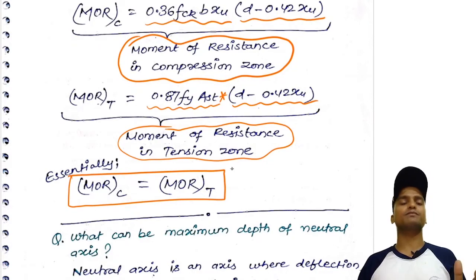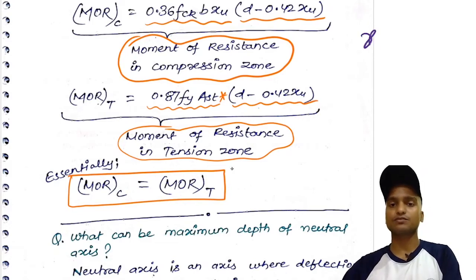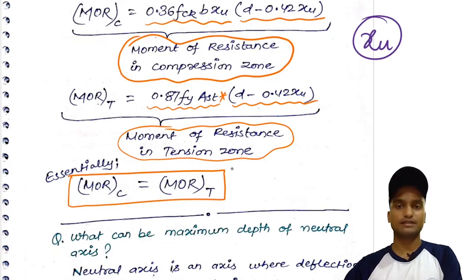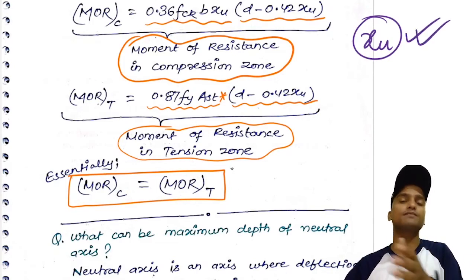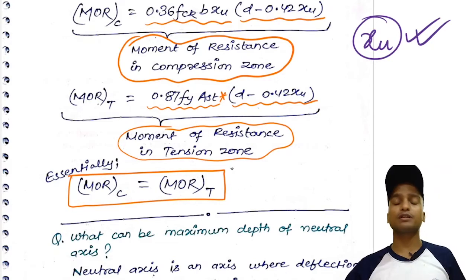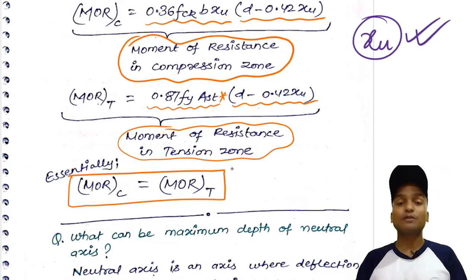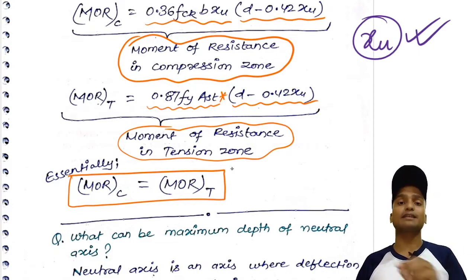Before calculating moment of resistance, you have to find the actual depth of neutral axis xu. This value is very important because it plays a significant role in the design of singly reinforced and doubly reinforced beams. Many design decisions depend on this depth of neutral axis, and it also has a maximum limiting value.